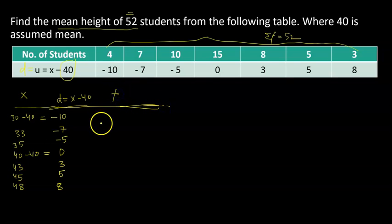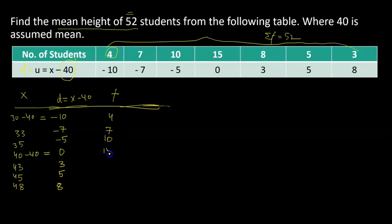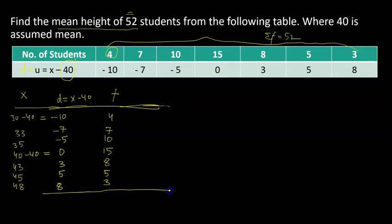Next, I'm given the frequency f. So there are 4 students with deviation negative 10 — 4 students scoring 30 marks. Then there are 7 students, 10 students, 15 students, 8, 5, and 3. I'll be finding their total also.